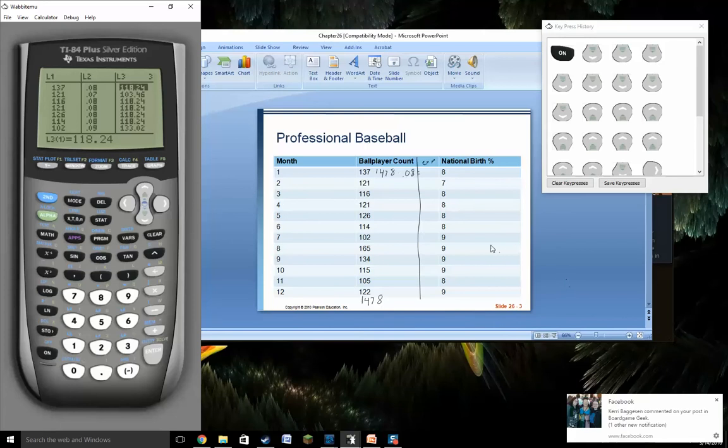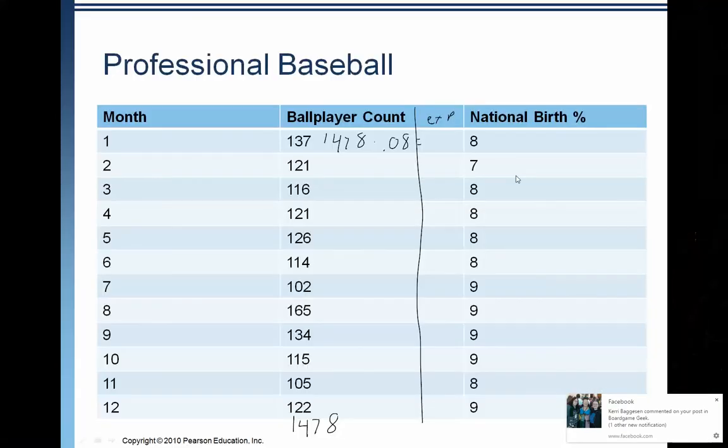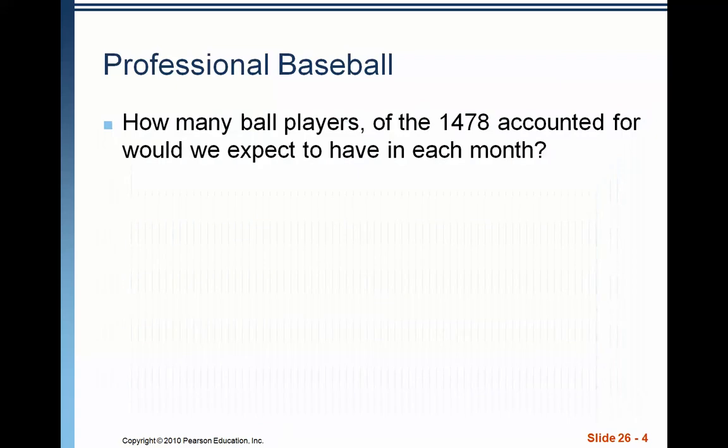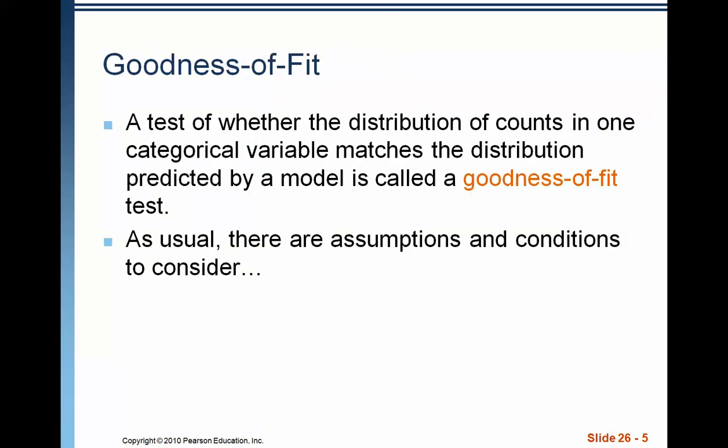Okay, so I've made an expected list. Let's go back here. I'm not going to write it on this slide because we're going to move on from this slide, but it's saved in my calculator. So what we're going to do is what's called a goodness of fit test, and this is a test that checks whether the distribution of counts in one categorical variable matches the distribution predicted by a model. And in this case, the model is the national birth rate, and we're seeing if the baseball player birth rate distribution matches the national birth rate distribution.